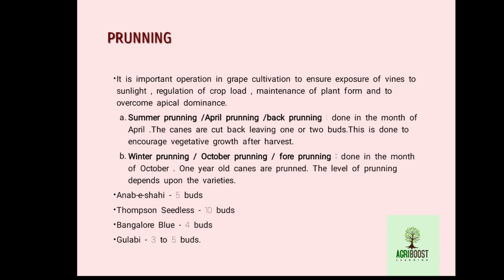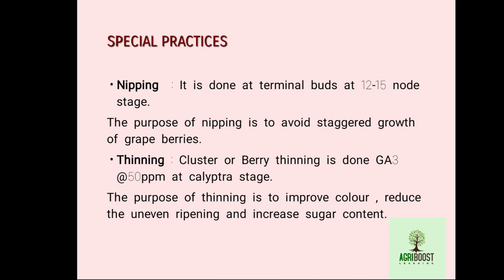Summer pruning or back pruning should be done twice in March to April. October or forward pruning is also called fruit pruning, commonly practiced in Andhra Pradesh, Maharashtra, and Karnataka. The staggered pruning cultivar is Bangalore Blue.